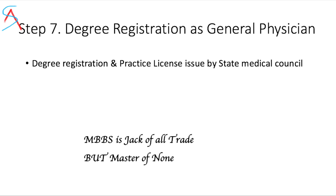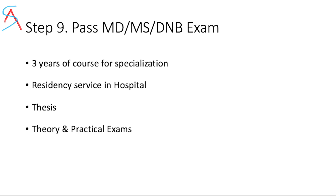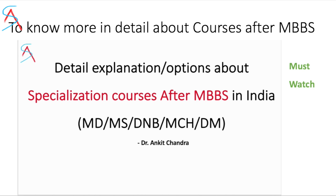After MBBS, you have to go for specialization. To get a seat in a particular medical specialty, you must write a PG entrance exam. These include NEET PG, AIIMS, JIPMER, SGPGI, and NIMHANS exams, which lead to an MD or MS degree. Alternatively, you can go for the Diplomate of National Board (DNB) exam. After getting a good rank in the PG entrance exam, you can pursue specialization. For more detail, watch the previous video on specialization courses after MBBS in India.